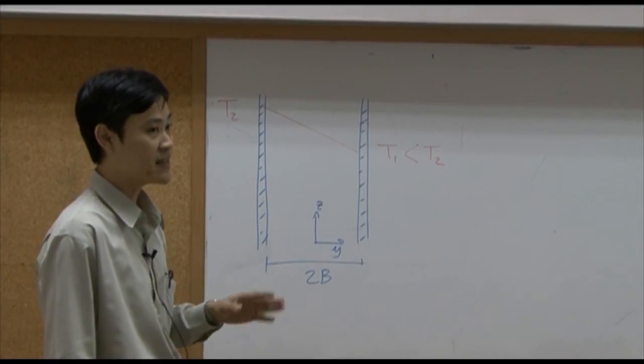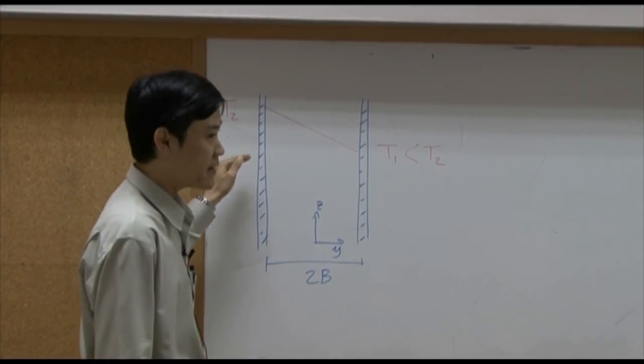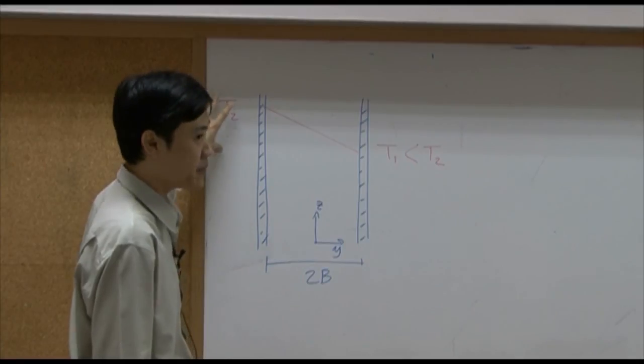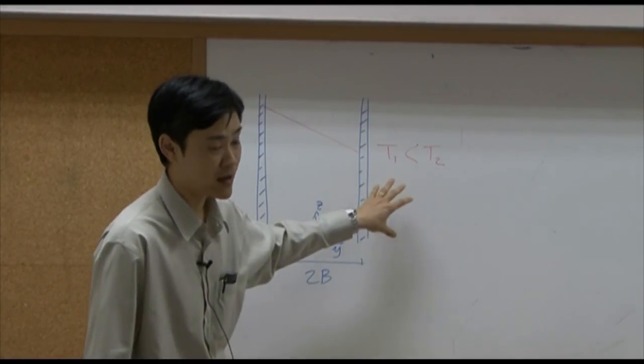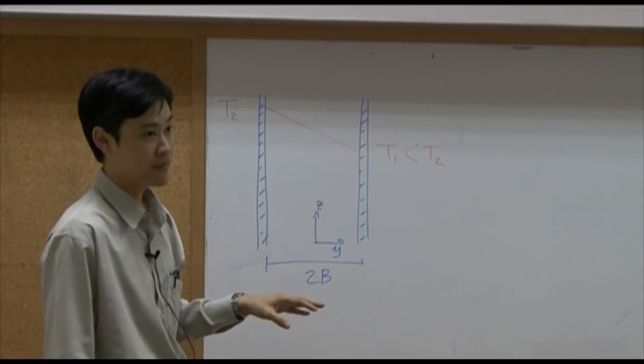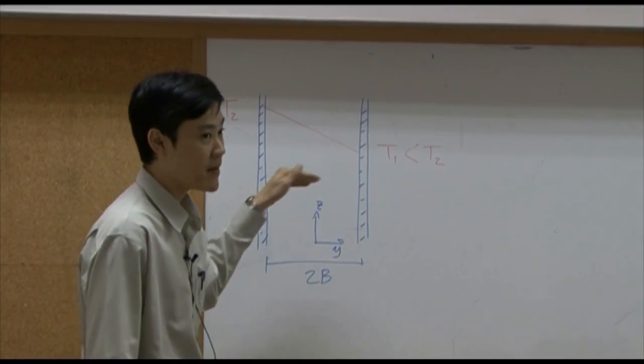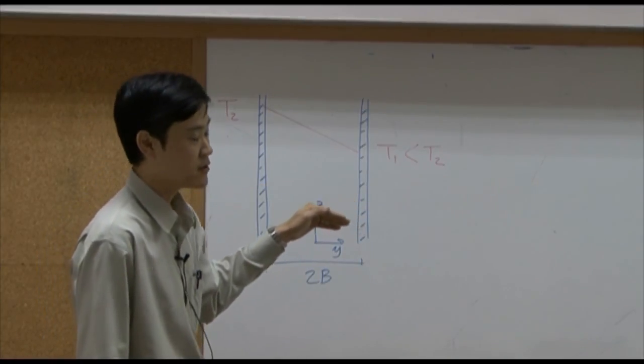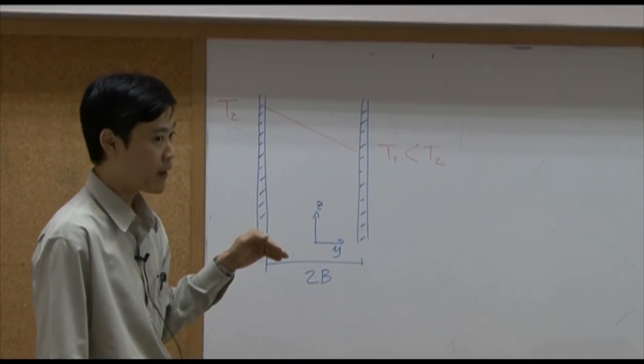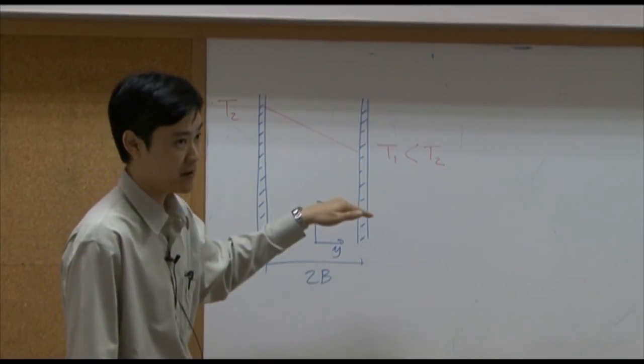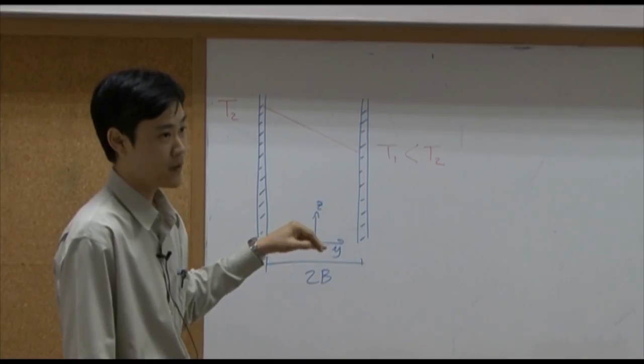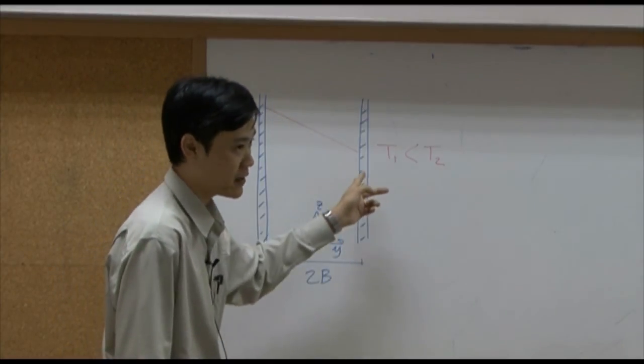If the fluid stands still, the heat transfer from high temperature side to low temperature side is basically conduction. And it is one dimensional conduction. Therefore, temperature profile is supposed to be linear. There will be linear temperature profile like this.